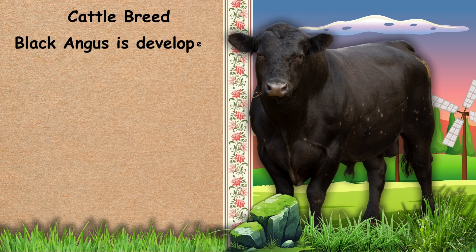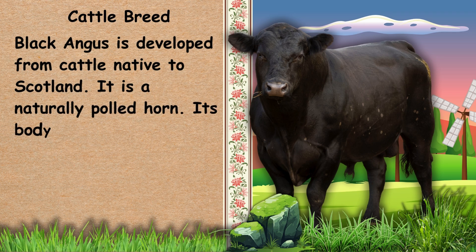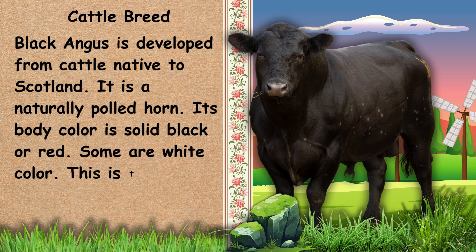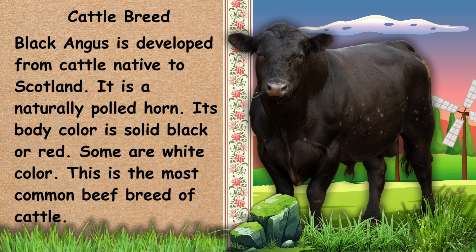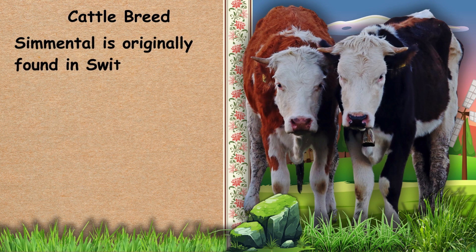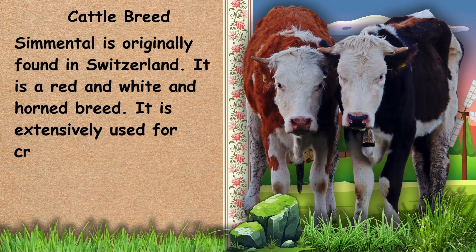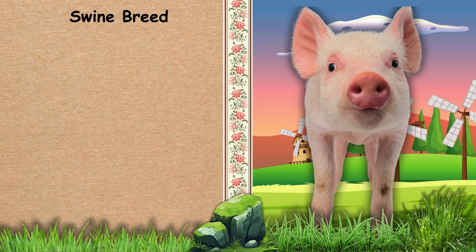Next, we have Black Angus. Black Angus is developed from cattle native to Scotland. It is a naturally polled horn. Its body color is solid black or red, and some are white. This is the most common beef breed of cattle. Next, we have Simmental. Simmental is originally found in Switzerland. It is a red and white horned breed, extensively used for crossbreeding.